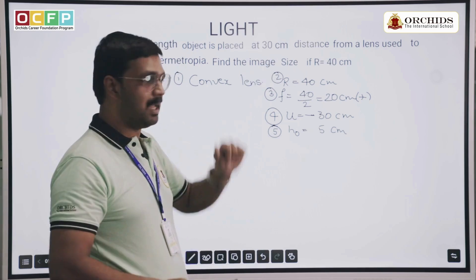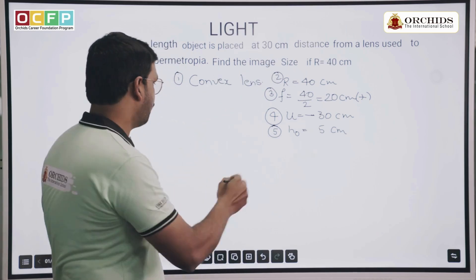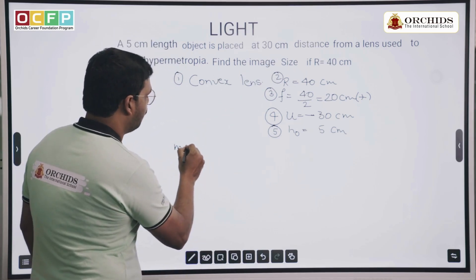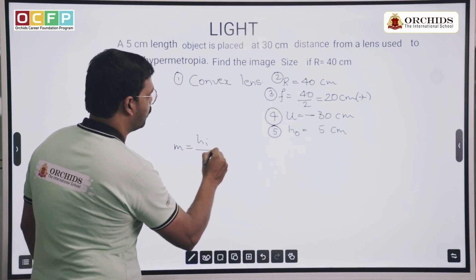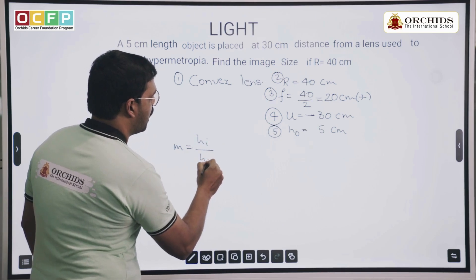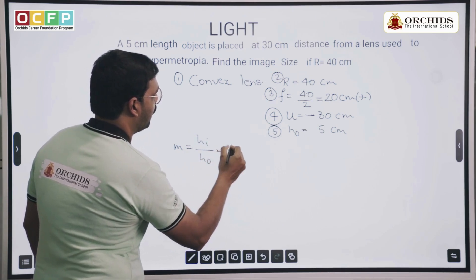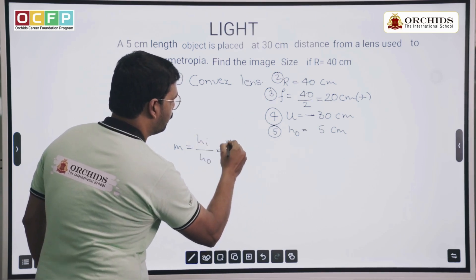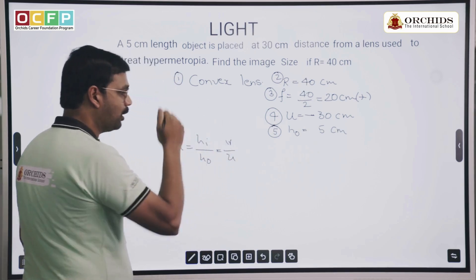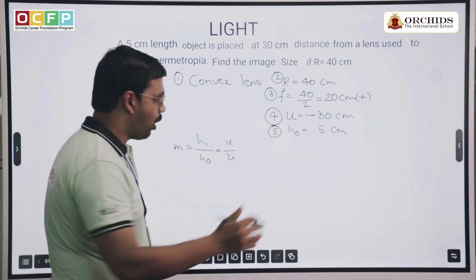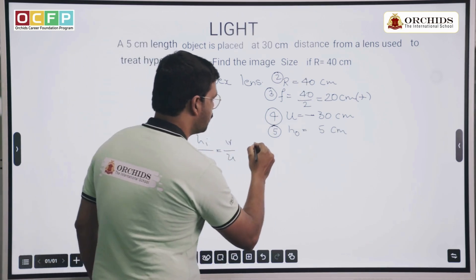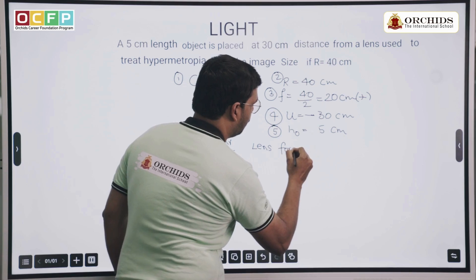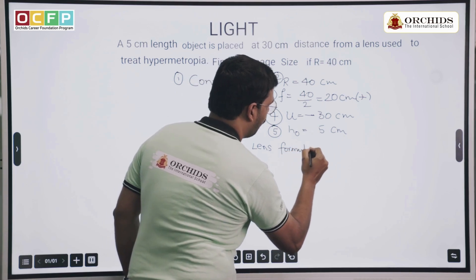They are asking you to find out the image size. The formula involved is magnification: magnification equals HI divided by H naught, which is also equal to v divided by u. We don't know the value of v, so we find it using the lens formula.